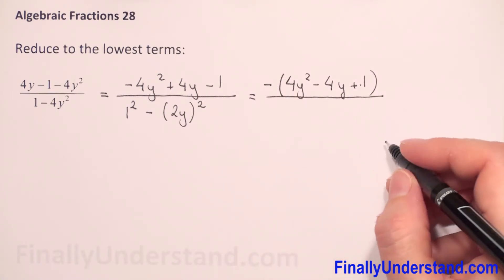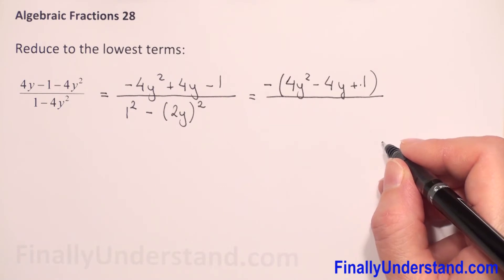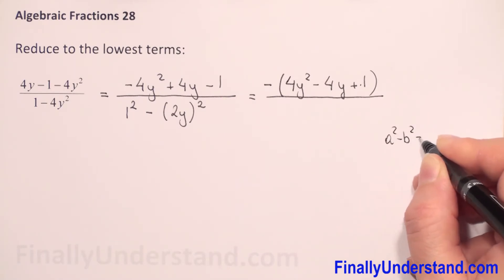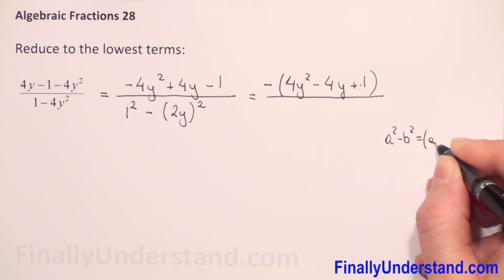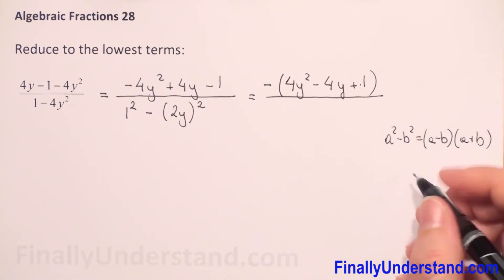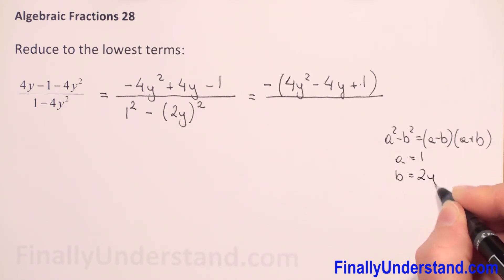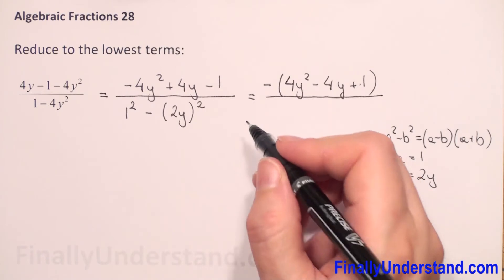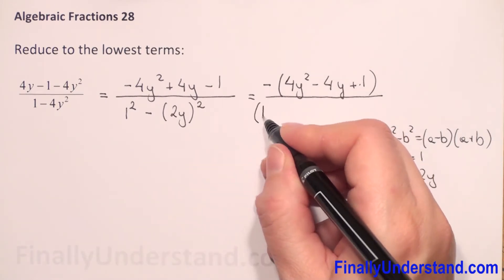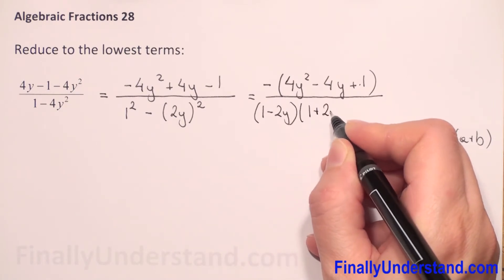In the denominator we have a difference of two perfect squares. If we have a squared minus b squared, this is equal to a minus b times a plus b. In our example, a is equal to 1 and b is equal to 2y. So we can rewrite our denominator as 1 minus 2y times 1 plus 2y.